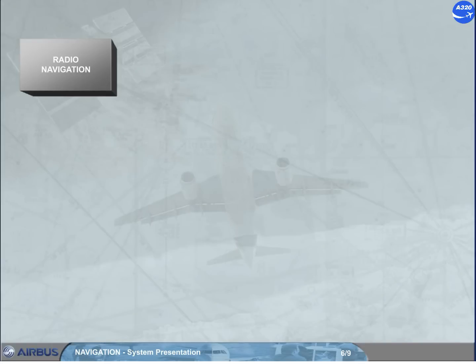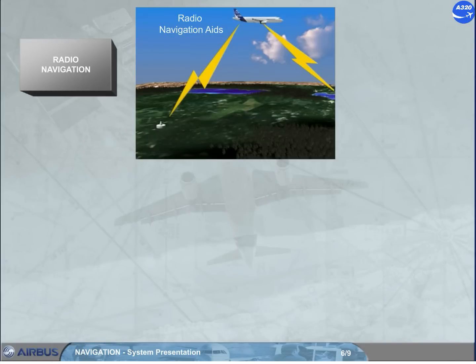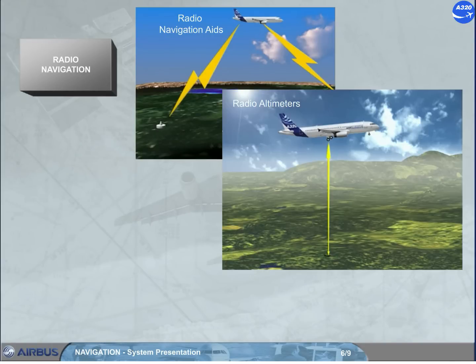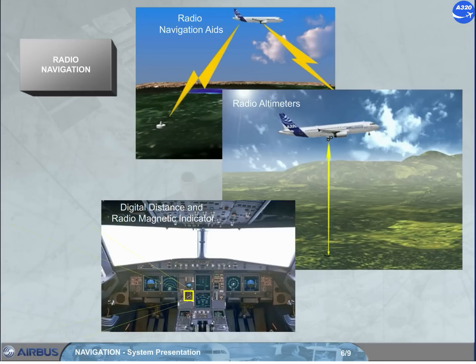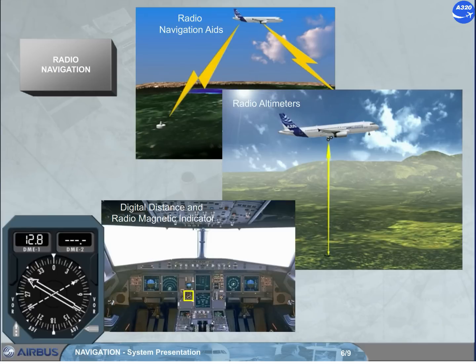The radio navigation group includes radio navigation aids, radio altimeters, and digital distance and radiomagnetic indicator (DDRMI).